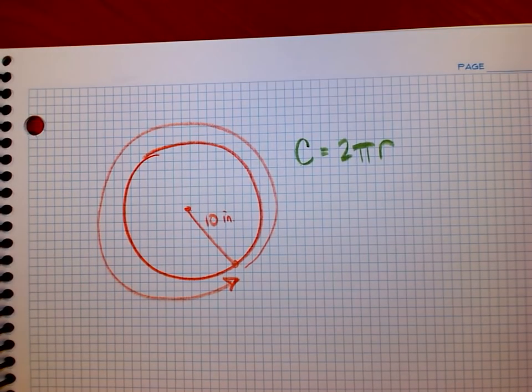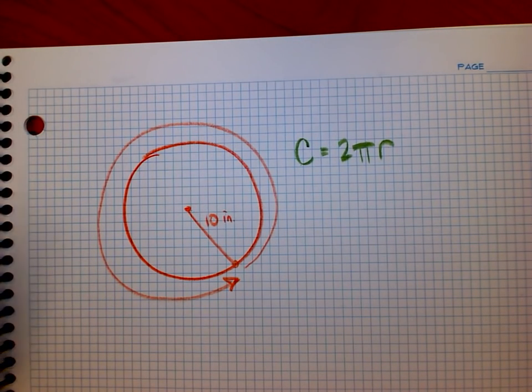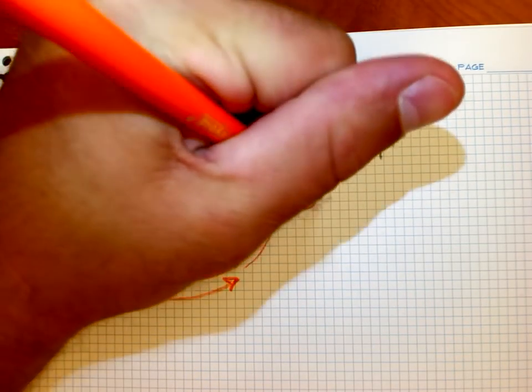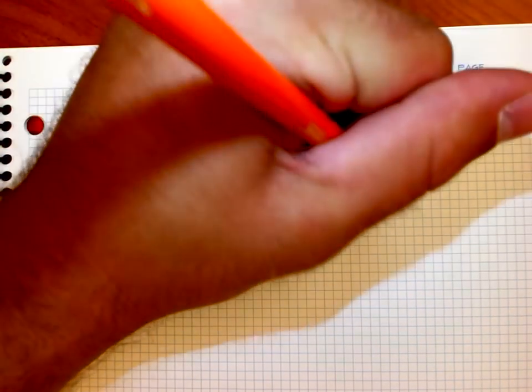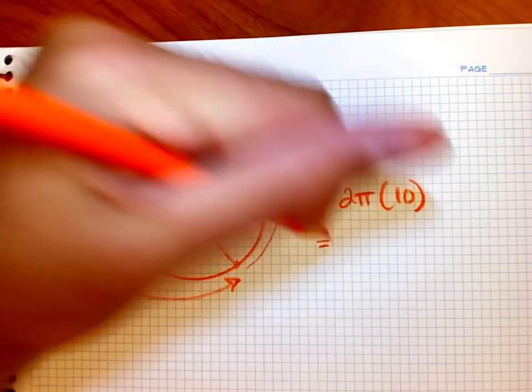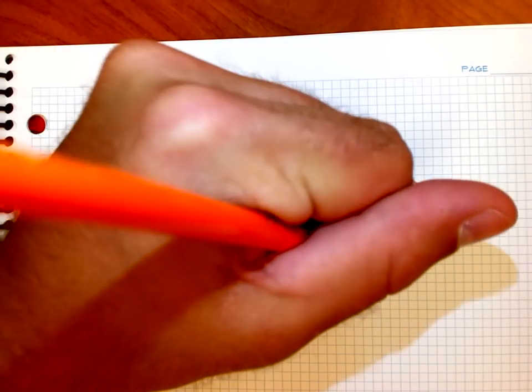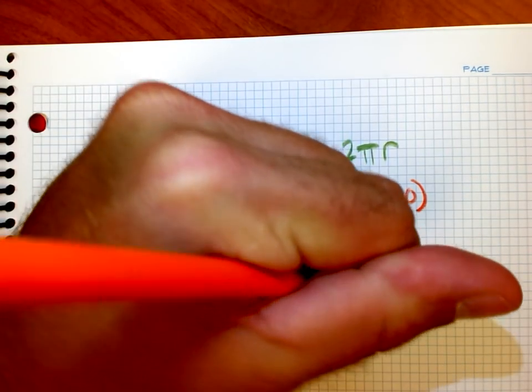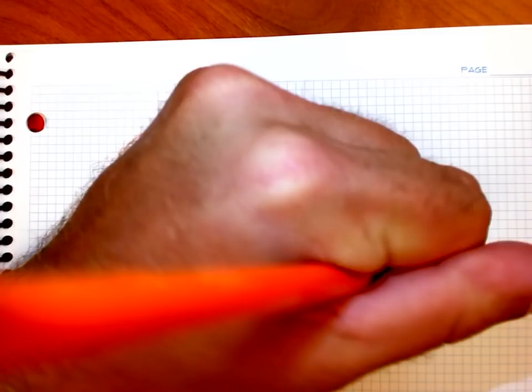So the formula here then tells us that if I want to find the circumference of the circle, that distance for one rotation, that would simply be 2π times, in this case, 10. And I can take the 2 and 10 and combine those two, so it's really 20 times π. And in this class, we're going to go ahead and use 3.14 for π. You probably have a π button on your calculator if you want to use that. But if I take 20 times 3.14, I'm going to get a grand total of 62.8 inches.